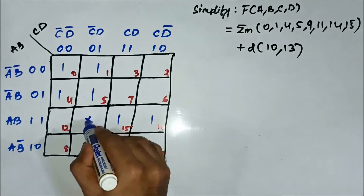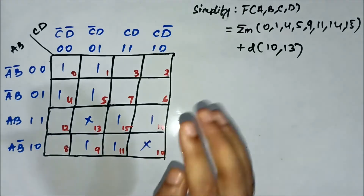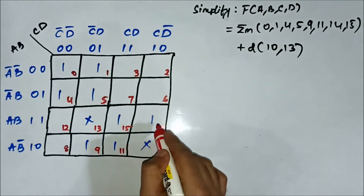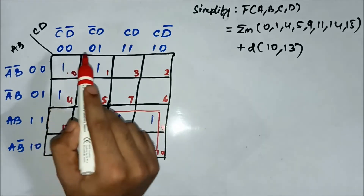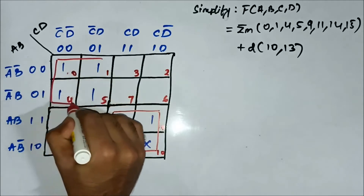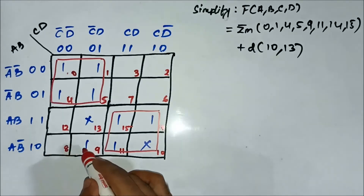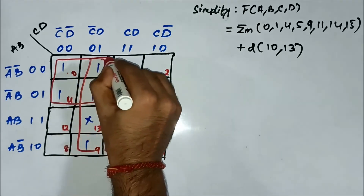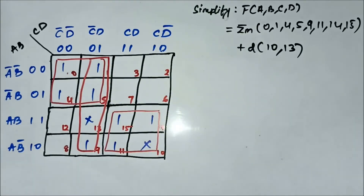The don't care values 10 and 13 are also marked. Now we have to form the groups. We can form a quad with cells 10, 11, 14, 15, and another quad with cells 0, 1, 4, 5. There is a one remaining, so we form another quad involving cells 1, 5, 13, 9. So there are three quads total.